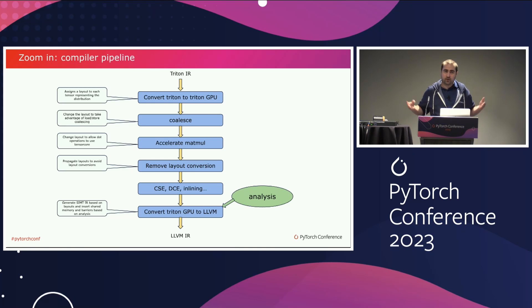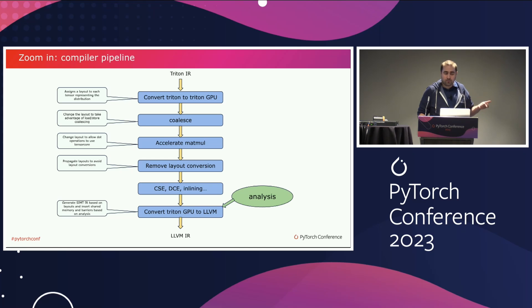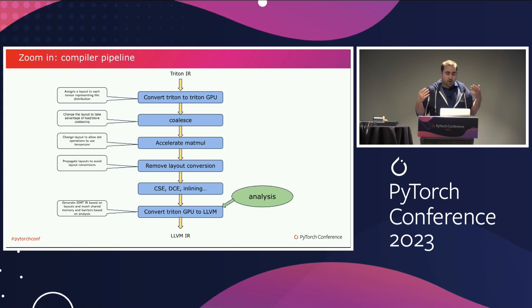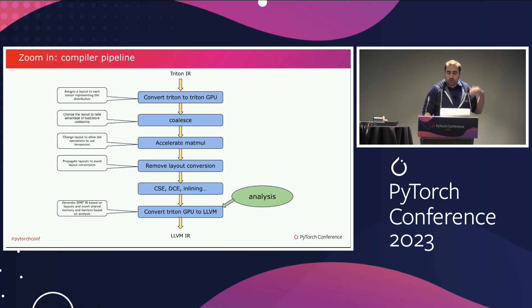The first thing the compiler does is associate a layout describing how the tensor is going to get distributed onto threads and warps — that is the core mechanic of the compiler. Based on those layouts, multiple passes change them to efficiently map onto hardware: a coalescing pass picks layouts so that load/store coalescing is efficient, layouts are chosen to fit tensor cores, unnecessary layout conversions are avoided, and then typical compiler passes are applied before the final conversion to LLVM IR.